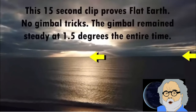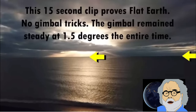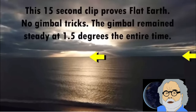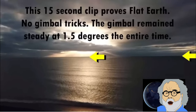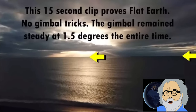Let's assume that this statement is true — there are no gimbal tricks and the gimbal was steady at 1.5 degrees. Then the line of sight would be 1.5 degrees down and at the middle of the screen. Why has the maker of this video set the gimbal at 1.5 degrees? On a globe earth the horizon is dropping with altitude, even when looking slightly down. This is not what we see in the video. What we are supposed to see on a flat earth cannot be calculated because there is no formula for the distance to the horizon. In fact, there isn't even an explanation for there being a crisp horizon in the first place.